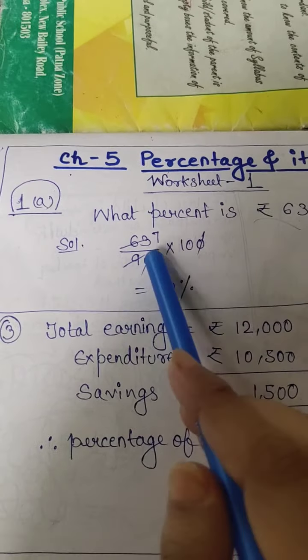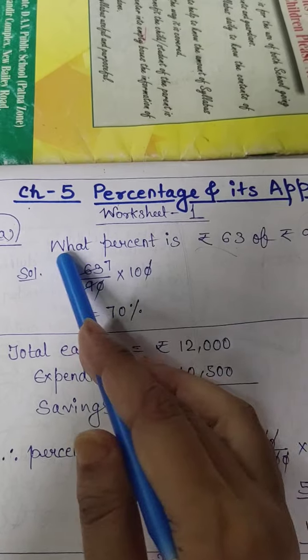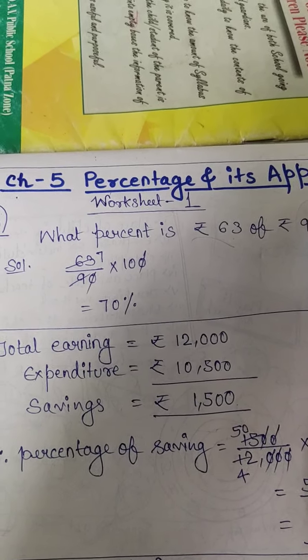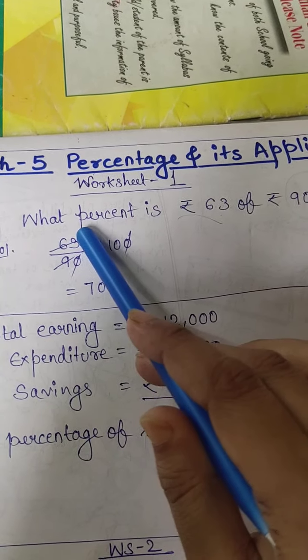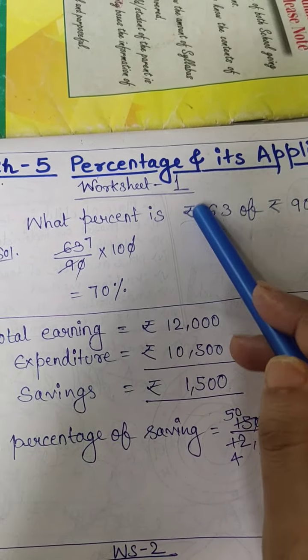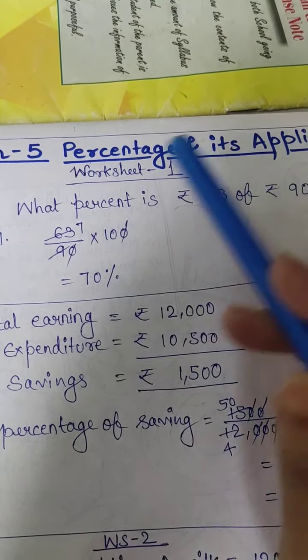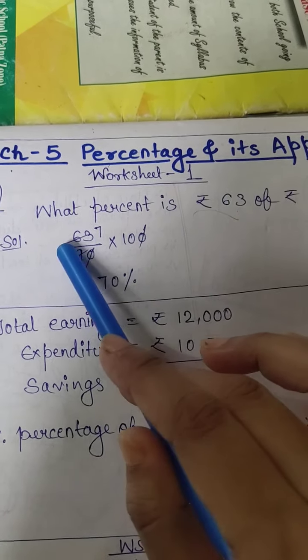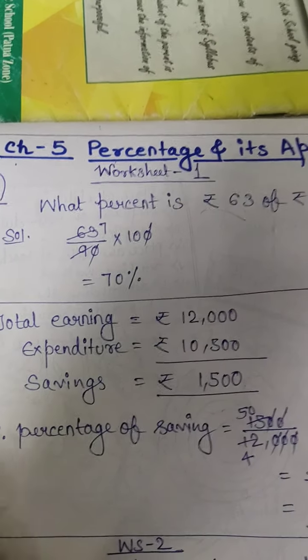Suppose I have taken this example of worksheet 1, question number 1a. You have to find percentage of rupees 63 of rupees 90. Very simple. All of you know that 63 will be the numerator, and total will be the denominator, that is 90, and you have to find the percentage. So you multiply it by percentage simply. After solving you will get 70 percent as answer.